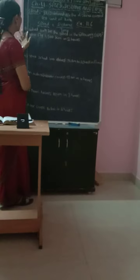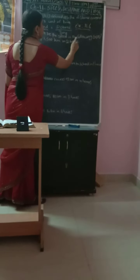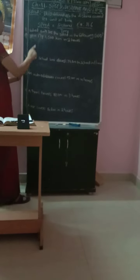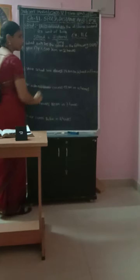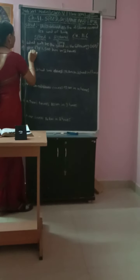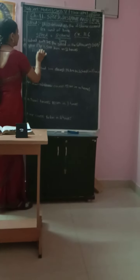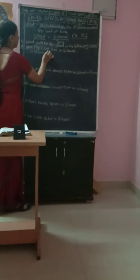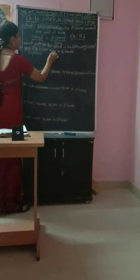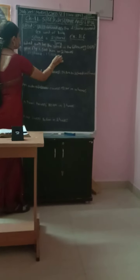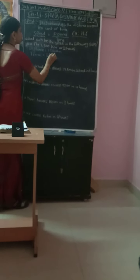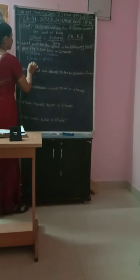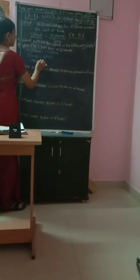First problem: What will be the speed in the following cases? First problem — a plane flies 1500 km in 2 hours. The distance given is 1500 km. Time is also given: time equals 2 hours. What is the speed? You can find out the speed.